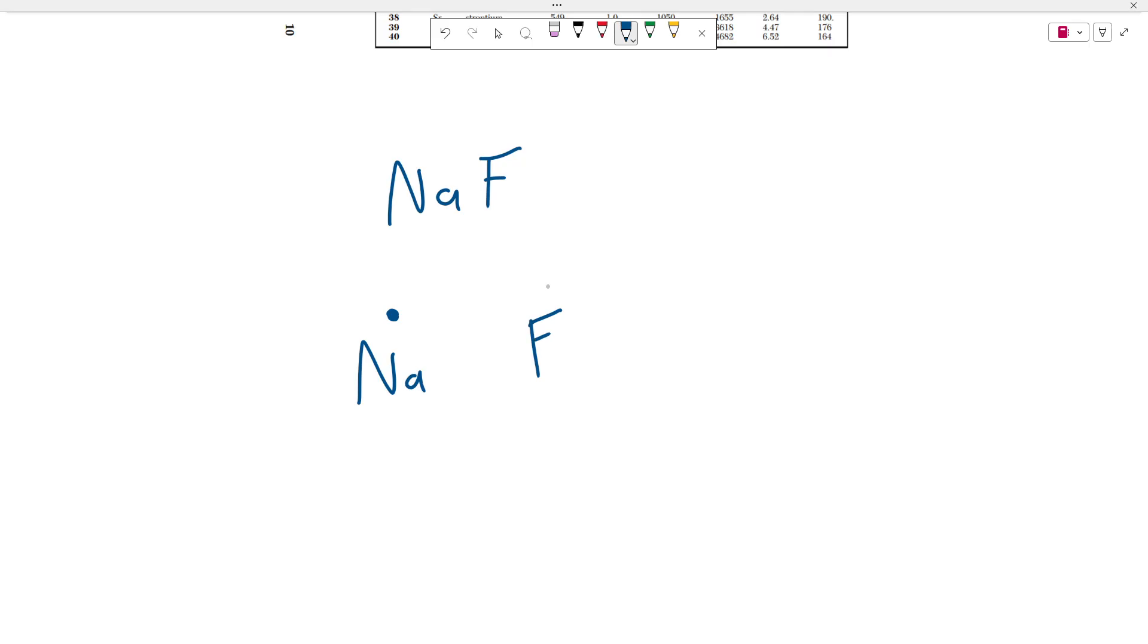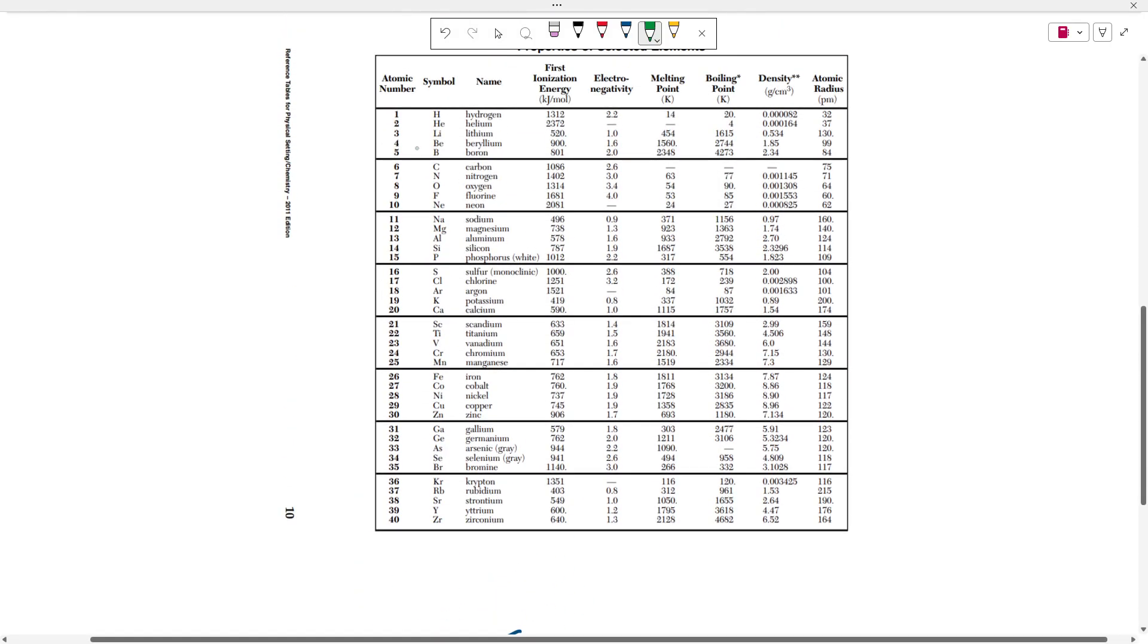This fluorine is going to have one, two, three, four, five, six, and seven valence electrons. This fluorine has a high electronegativity. It's really good at pulling or attracting electrons from other species away from it. So in this orbital, it has seven, and it has an electronegativity of four. This sodium has an electronegativity of only 0.9.